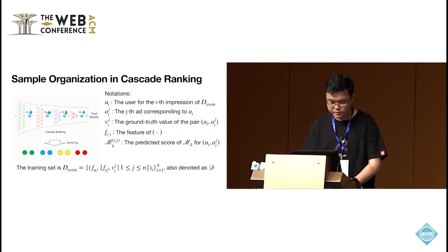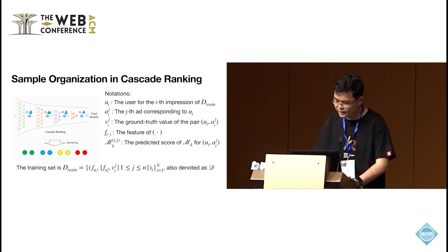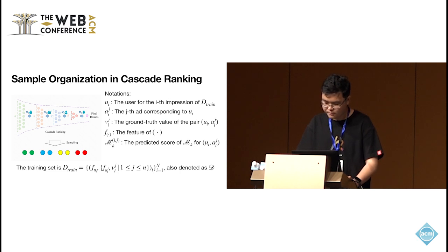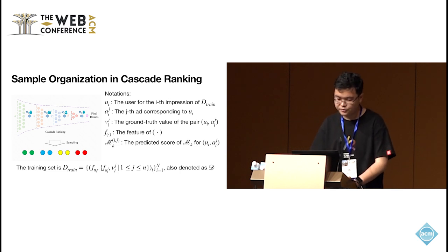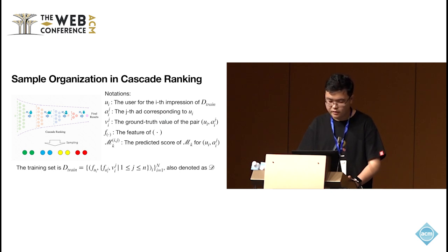This figure shows the organization of training samples in typical Cascade Ranking System. We often down-sample aids from the entire space, and then let one stage learn from its post stages through learning to rank methods, such as letting pre-ranking model learn from the results of ranking models to maximize the traffic efficiency. For the notations of training set: UI denotes the user of the I-th impression or the I-th tuple. AIG denotes the G-th aid corresponding to UI. VIG denotes the ground truth value of the pair UI and AIG.